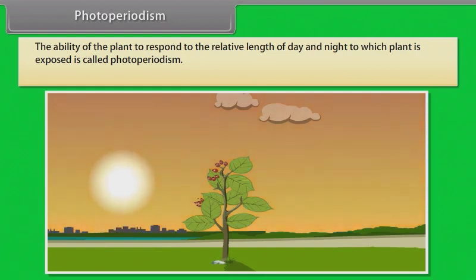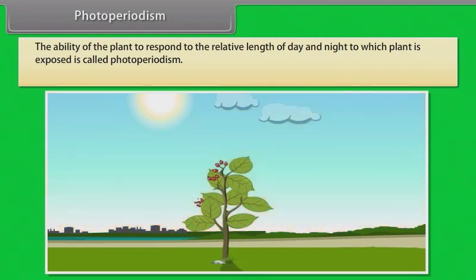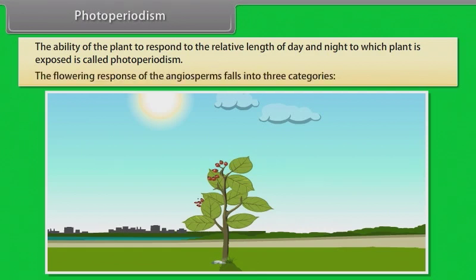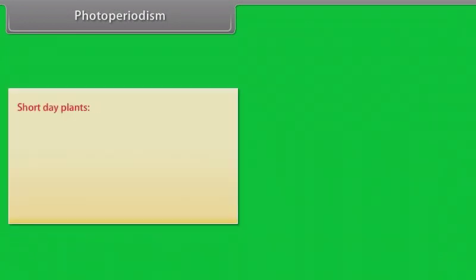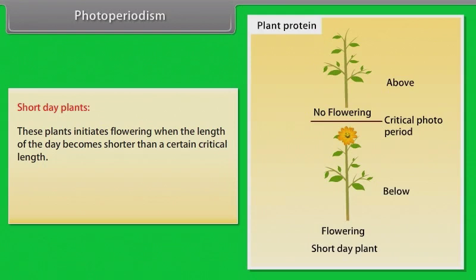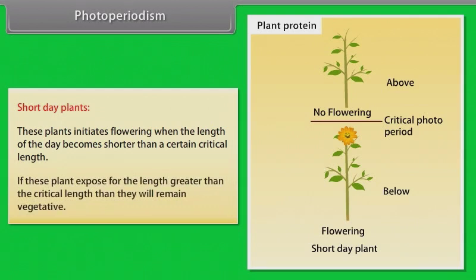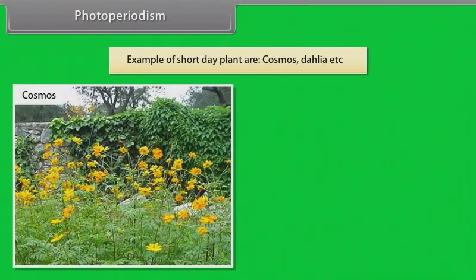Photoperiodism. The ability of plants to respond to the relative length of day and night to which the plant is exposed is called photoperiodism. The flowering response of the angiosperms falls into three categories. Short day plants - these plants initiate flowering when the length of the day becomes shorter than a certain critical length. If these plants are exposed for the length greater than the critical length, then they will remain vegetative. Examples of short day plants are cosmos and dahlia.